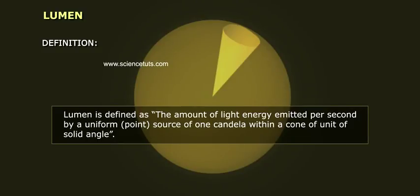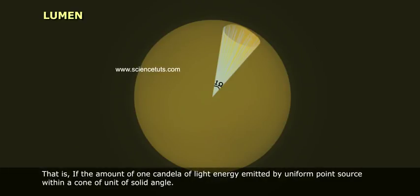Definition: Lumen is defined as the amount of light energy emitted per second by a uniform point source of one candela within a cone of unit of solid angle. That is, if the amount of one candela of light energy emitted by a uniform point source within a cone of unit of solid angle.